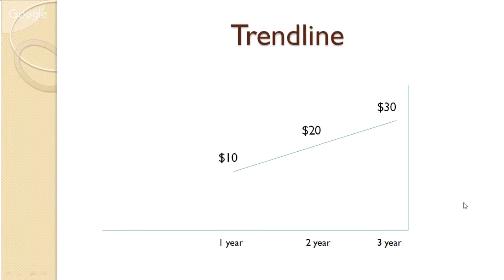A trend is a general direction of the market or of the price of an asset. Trends can vary in length from short-term to intermediate to long-term. As a general strategy, it's best to trade with trends — if the general trend of the market is headed up, you should be very cautious about taking any positions opposite to the general trend. A tool that traders use to identify a trend in every market is a trend line, which is drawn between high and low points for an asset over a period of time.